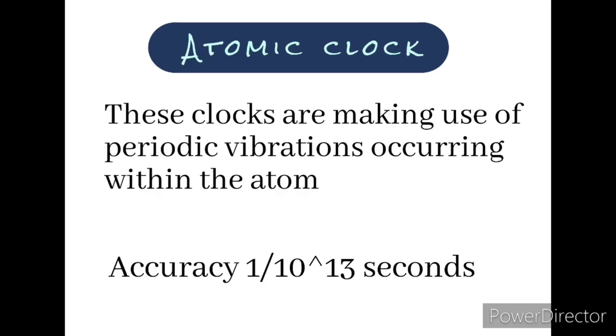Atomic clock: It makes use of periodic vibrations that occur within the atom. Its accuracy is one second in 10 to the power of 13 seconds.